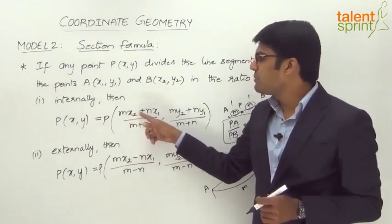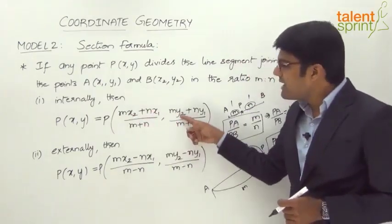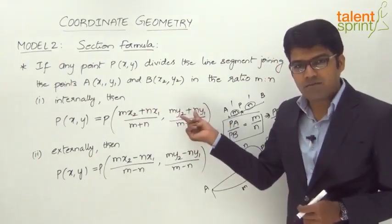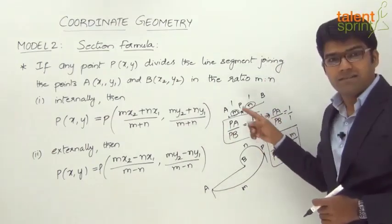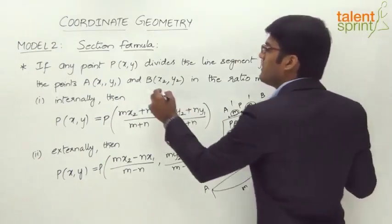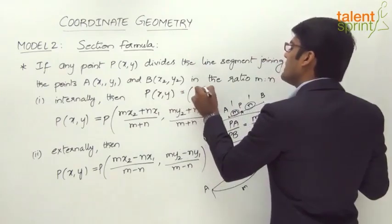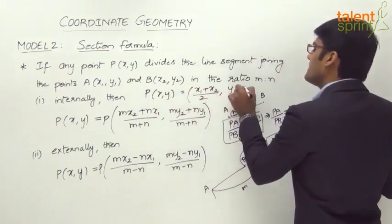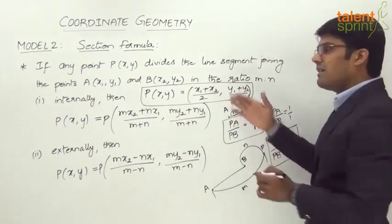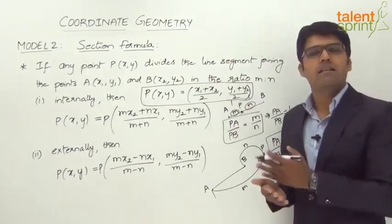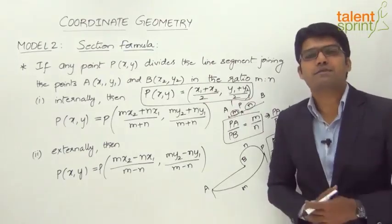In that case, how do you calculate the coordinates of P? Just substitute m equals 1 and n equals 1. So 1·x2 + 1·x1, which is x2 + x1, divided by 1 + 1, which is 2. And likewise 1·y2 + 1·y1, so y2 + y1 divided by 2. So we see that if P is the midpoint, the coordinates P(x, y) will be equal to ((x1 + x2)/2, (y1 + y2)/2). This is one simple point which can be understood from the section formula — if it is a midpoint, the ratio is 1 is to 1 and the coordinates will be ((x1 + x2)/2, (y1 + y2)/2).